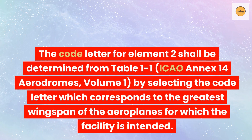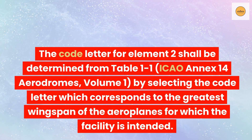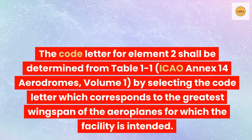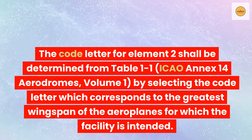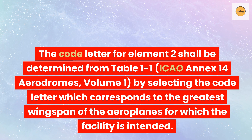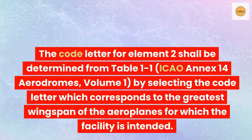The code letter for element 2 shall be determined from Table 1-1, ICAO Annex 14 Aerodromes, Volume 1, by selecting the code letter which corresponds to the greatest wingspan of the aeroplanes for which the facility is intended.